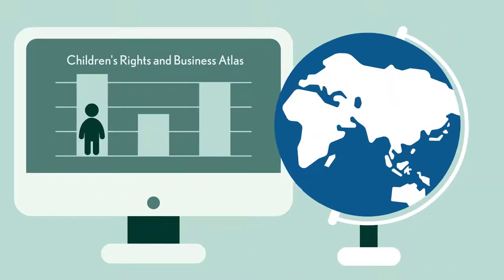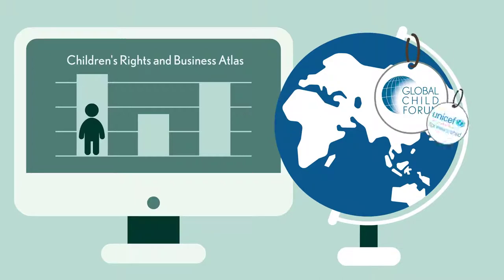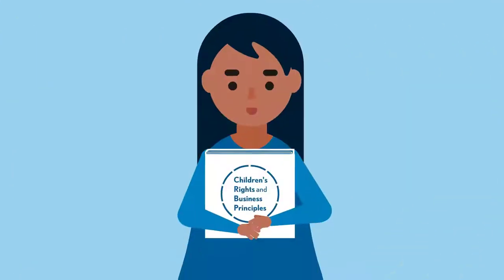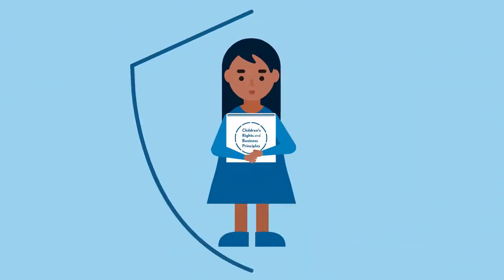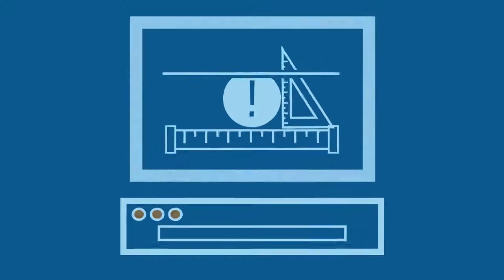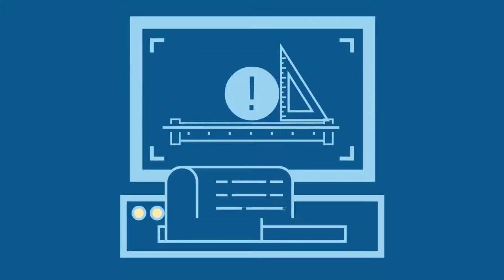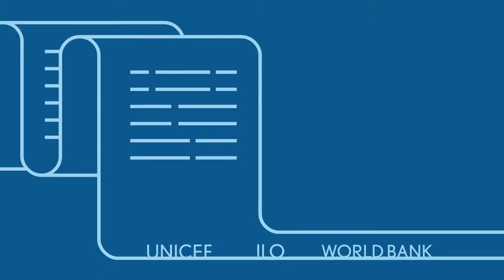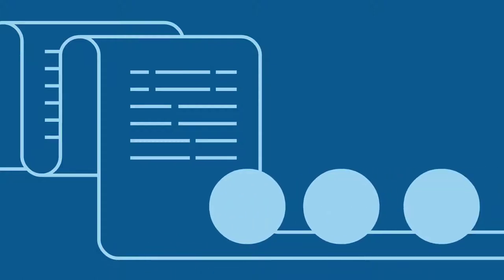The Atlas was developed by the Global Child Forum and UNICEF to help business understand and mitigate its impacts around the world. We know the rights children have, and there's real-world data to back it up — thanks to UNICEF, the ILO, the World Bank, and many other organizations. The Atlas has statistics that measure all the critical outcomes.